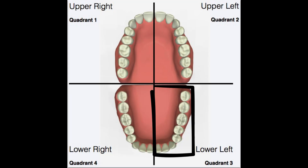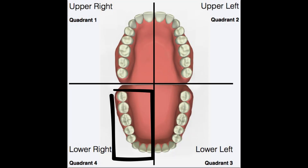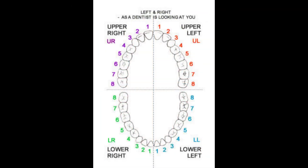The mandibular left quadrant, also called the lower left quadrant or quadrant number three, refers to that area of the oral cavity. An important point to note when writing down quadrant numbers is that when we look directly at the oral cavity from the front, the anatomical directions of right and left are reversed.